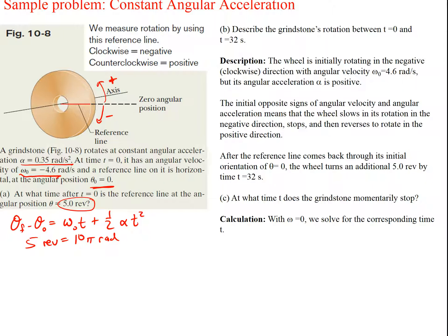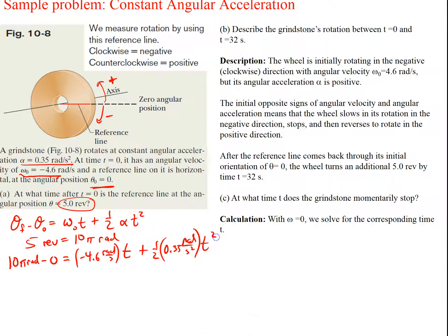Plugging into our equation: the final position is 10π radians minus 0 (initial position) equals omega₀ (−4.6 rad/s) times t, plus ½ times alpha (0.35 rad/s²) times t². We have a quadratic equation with a t² term and a t term. Rearranging and solving the quadratic, we get t = 32 seconds.